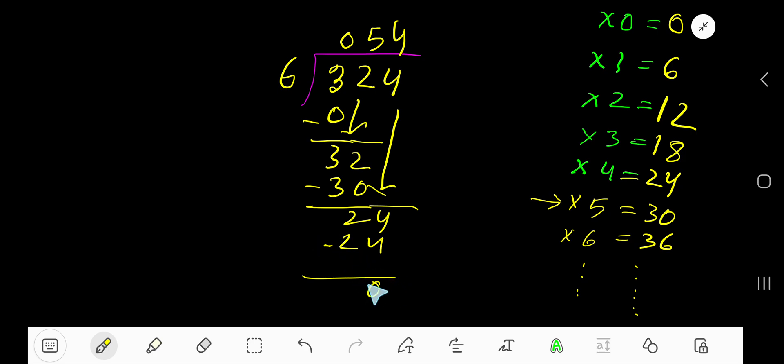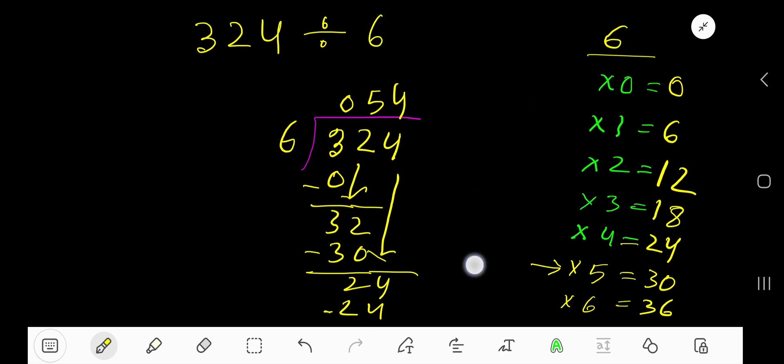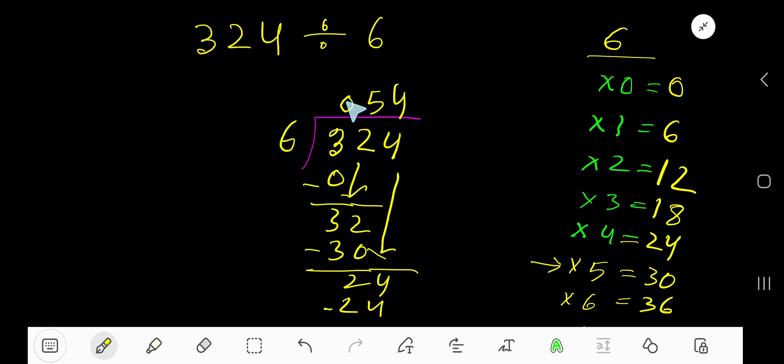You are getting 0 as remainder, so 54. This 0 doesn't have any value as it is left. So 54 is your answer.